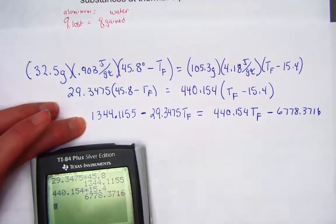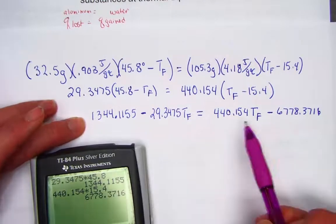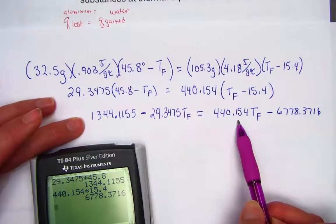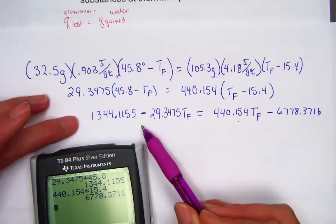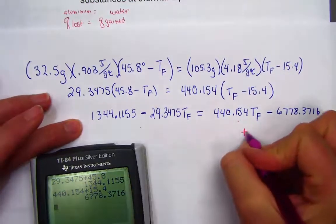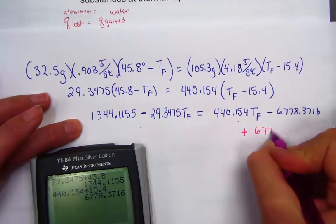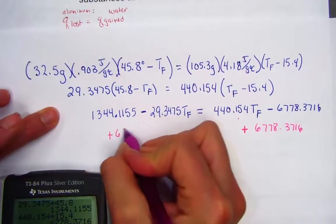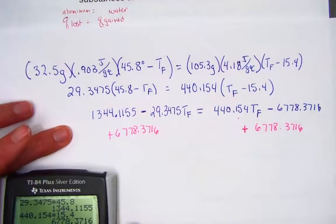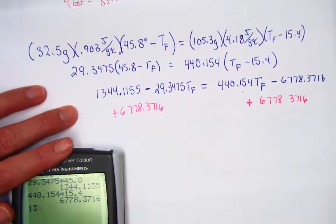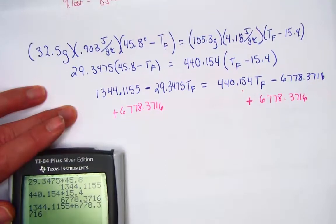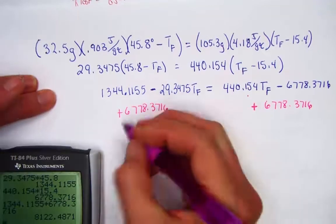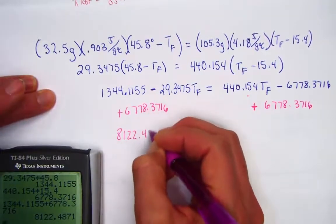And now we need to bring like terms to the same side of the equation. Let's bring final temperature to the right side to keep it positive, and we'll bring the number to the left side and keep it positive. So let's add, both sides are going to be added 6778.3716. And let's do that, and we'll just simplify what we have. So 1344.1155 adding to that a value of 6778.3716 is showing 8122.4871.